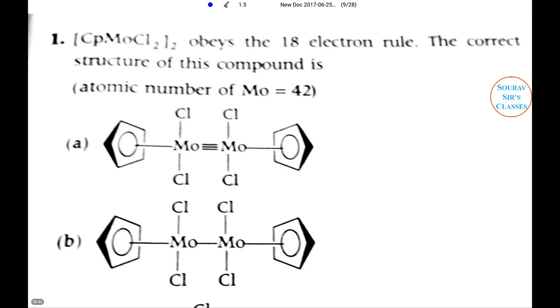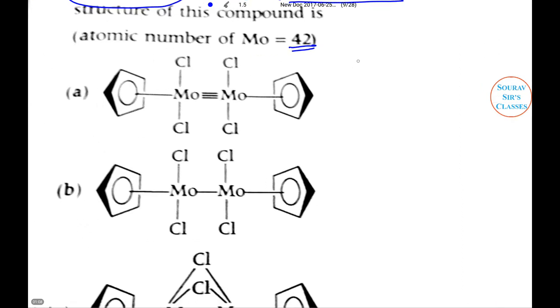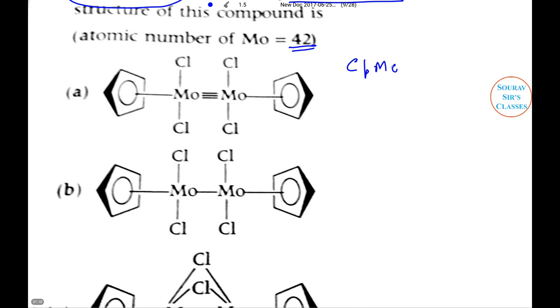Now without further ado, let's start with the questions today. Here we have a compound that follows the 18 electron rule. They have asked for the correct structure of this compound, and the atomic number of Mo is given as 42.